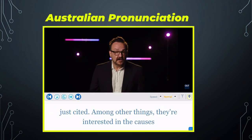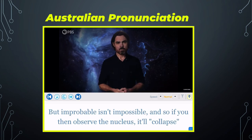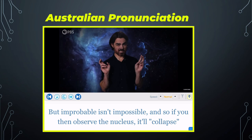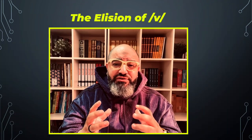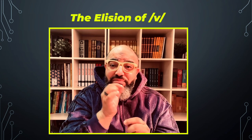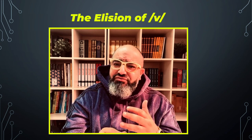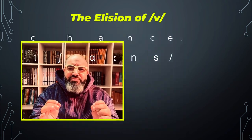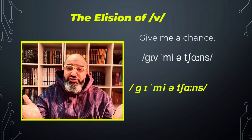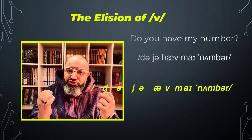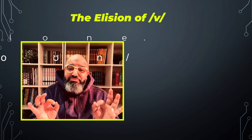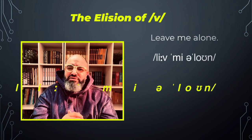But improbable isn't impossible. So when you observe the nucleus, it'll collapse into one of these two states — either business as usual, or a nuclear decay. Now, sometimes the V sound can be elided in rapid speech before the M sound in the verbs 'give,' 'have,' and 'leave.' For example, 'give me a chance' becomes 'gi-me a chance,' 'do you have my number' becomes 'do you ha-my number,' 'leave me alone' becomes 'lea-me alone.'